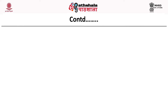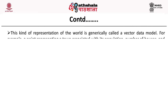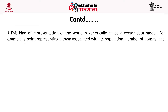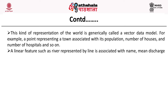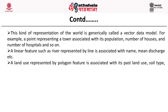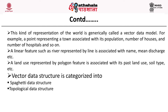This kind of representation is generically called a vector data model. For example, a point representing a town is associated with its population, number of houses and number of hospitals. A linear feature such as a river, represented by a line, is associated with name and mean discharge. A land use represented by polygon features is associated with its past land use, soil type, soil moisture, and so on.